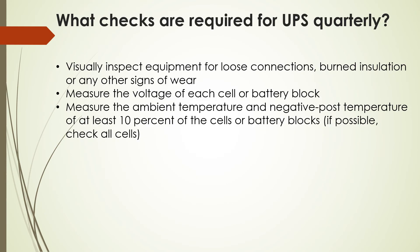What checks are required for UPS quarterly? Visually inspect equipment for loose connections, burnt insulation, or any other signs of wear. Measure the voltage of each cell or battery block. Measure the ambient temperature and negative post temperature of at least 10% of cells or battery blocks. If possible, check all the cells.